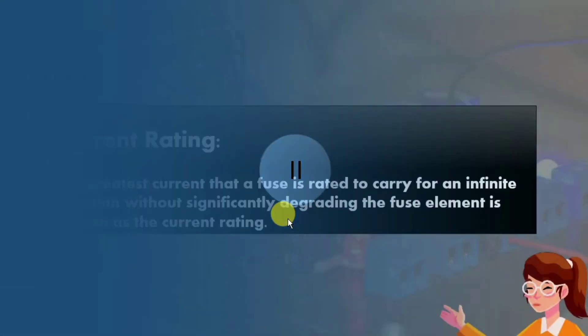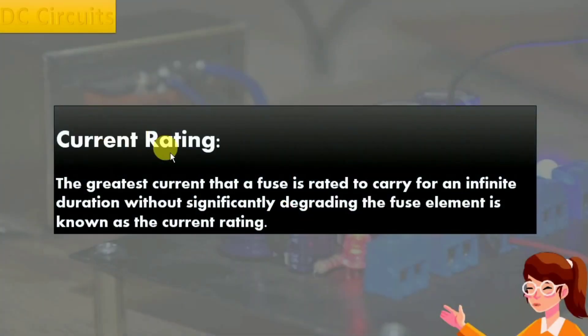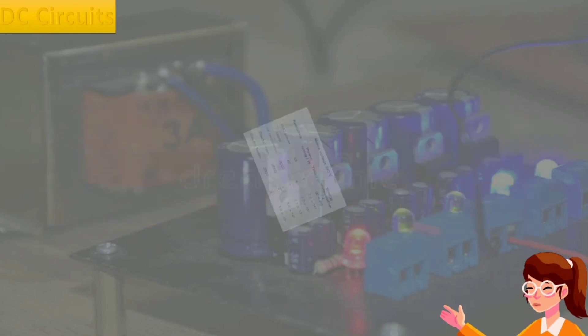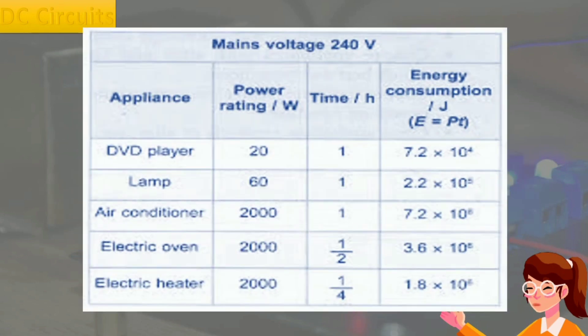Second reason is the current rating. The greatest current that a fuse is rated to carry for an infinite duration without significantly degrading the fuse element is known as the current rating. Moreover, every appliance has different current ratings on which it operates.